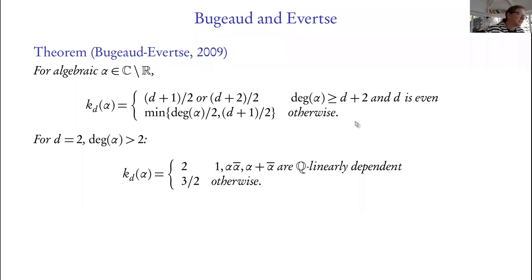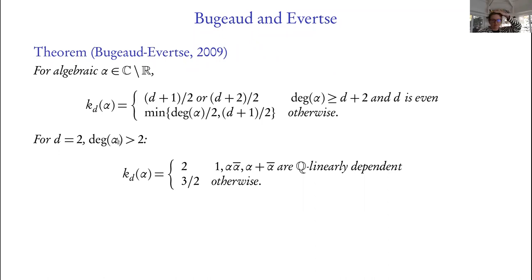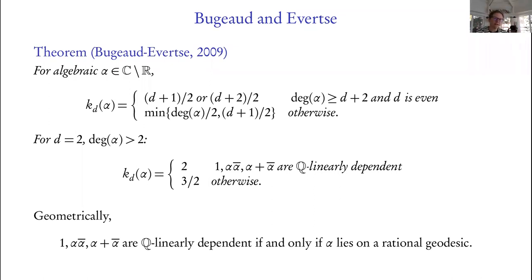So they're able to compute this exponent in pretty much all cases. In the d=2 case — approximating α of larger algebraic degree by quadratic numbers — the answer is either 2 or 3/2. There are two distinct types of behavior, and what it depends on is whether 1, α, ᾱ, and α+ᾱ — where ᾱ is the complex conjugate — are Q-linearly dependent or not.